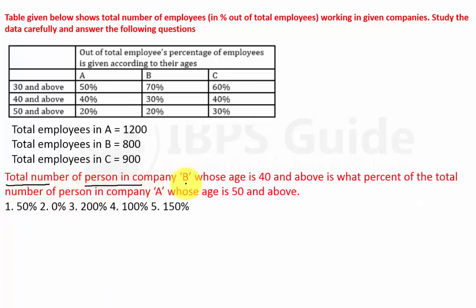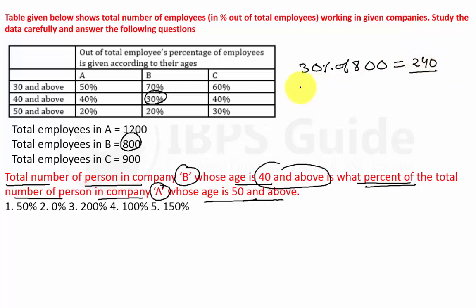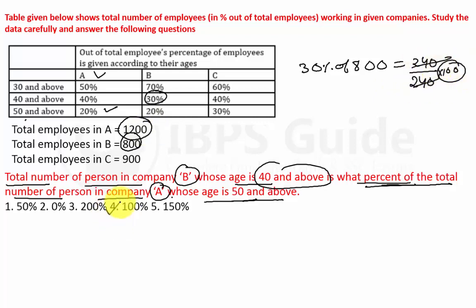Question 4: The total number of persons in Company B whose age is 40 and above is what percent of the total number of persons in Company A whose age is 50 and above? In Company B, 40 and above is 30%. 30% of 800 gives 240. Company A, 50 and above is 20%. 20% of 1200 is also 240. So 240 divided by 240 multiplied by 100 equals 100%. Option number 4 is the correct answer.